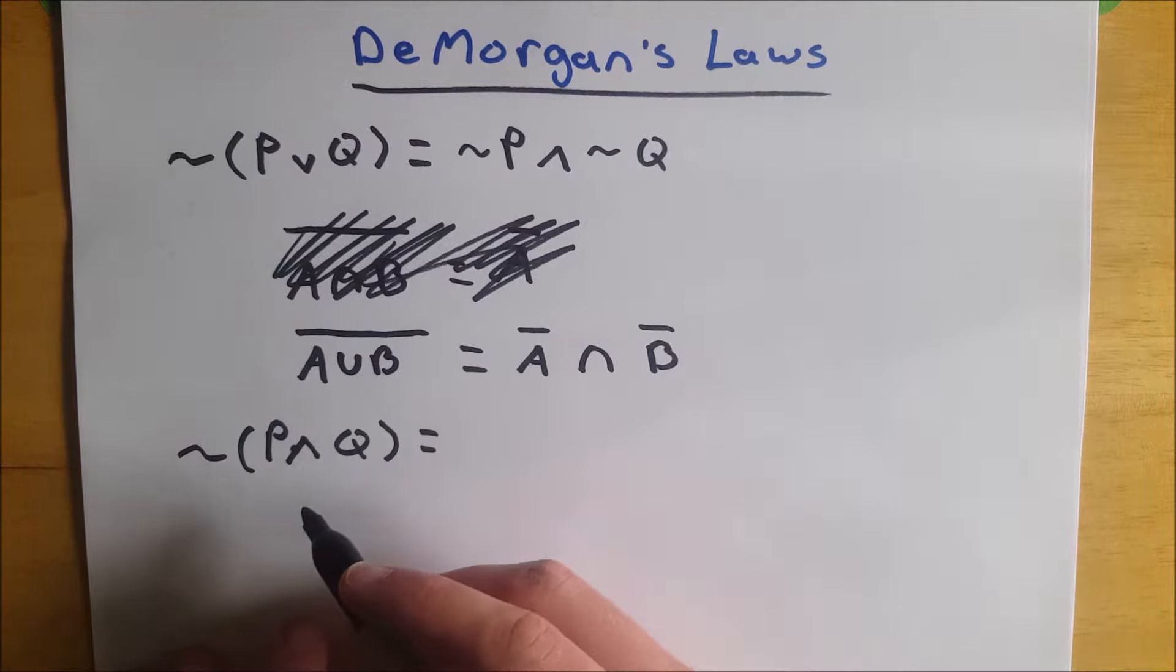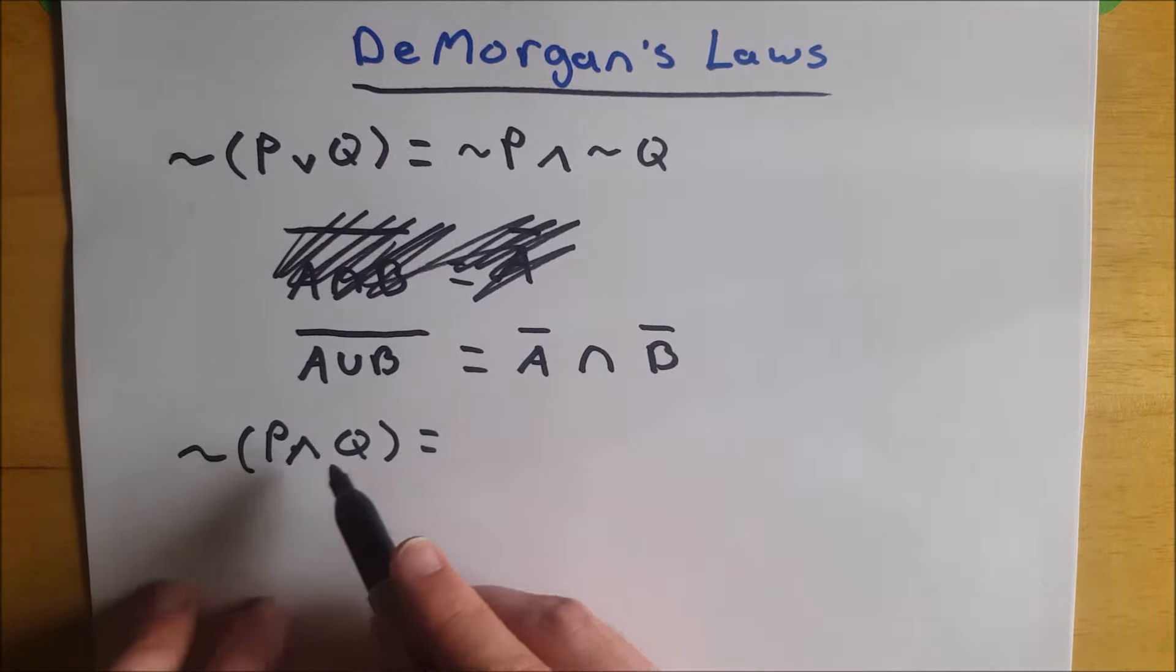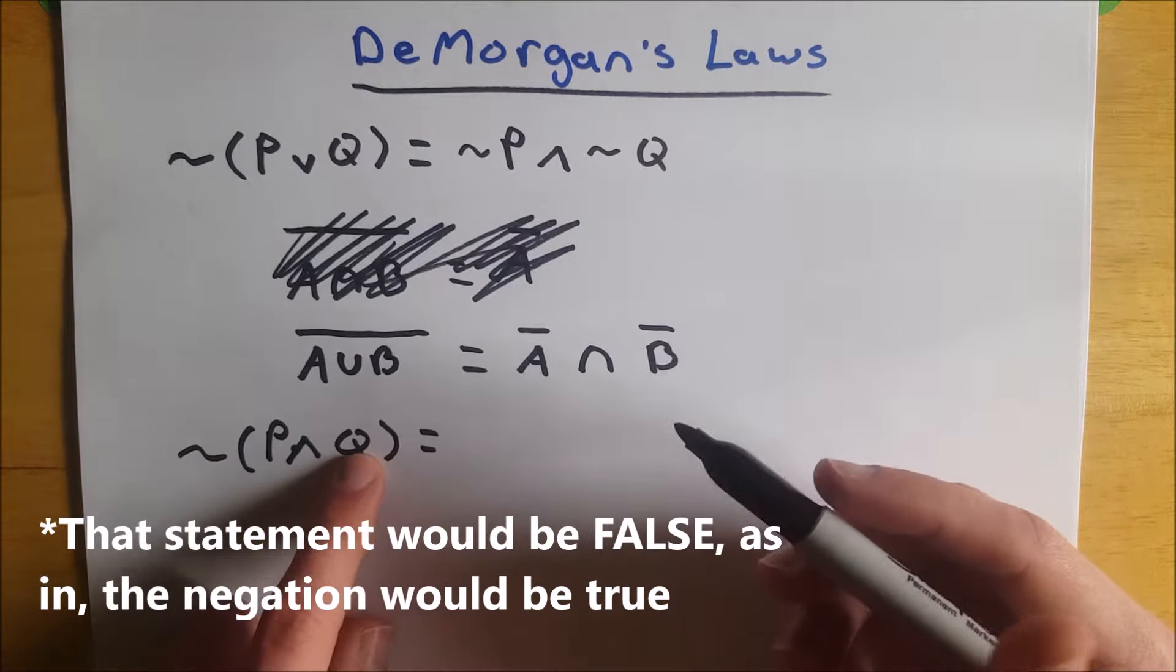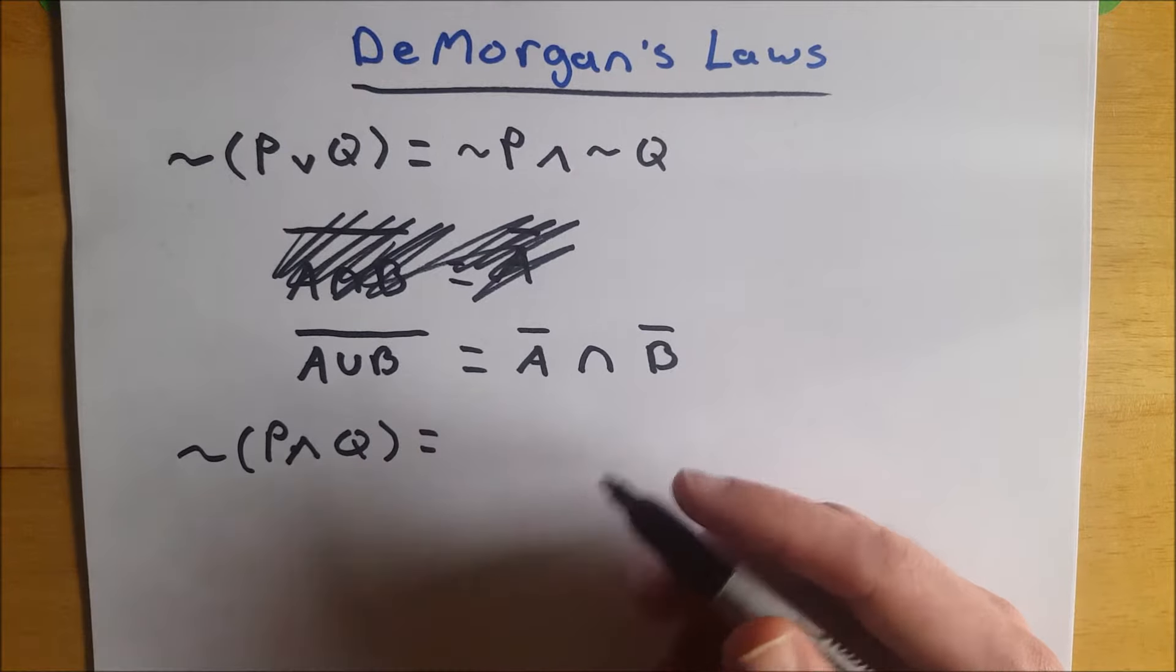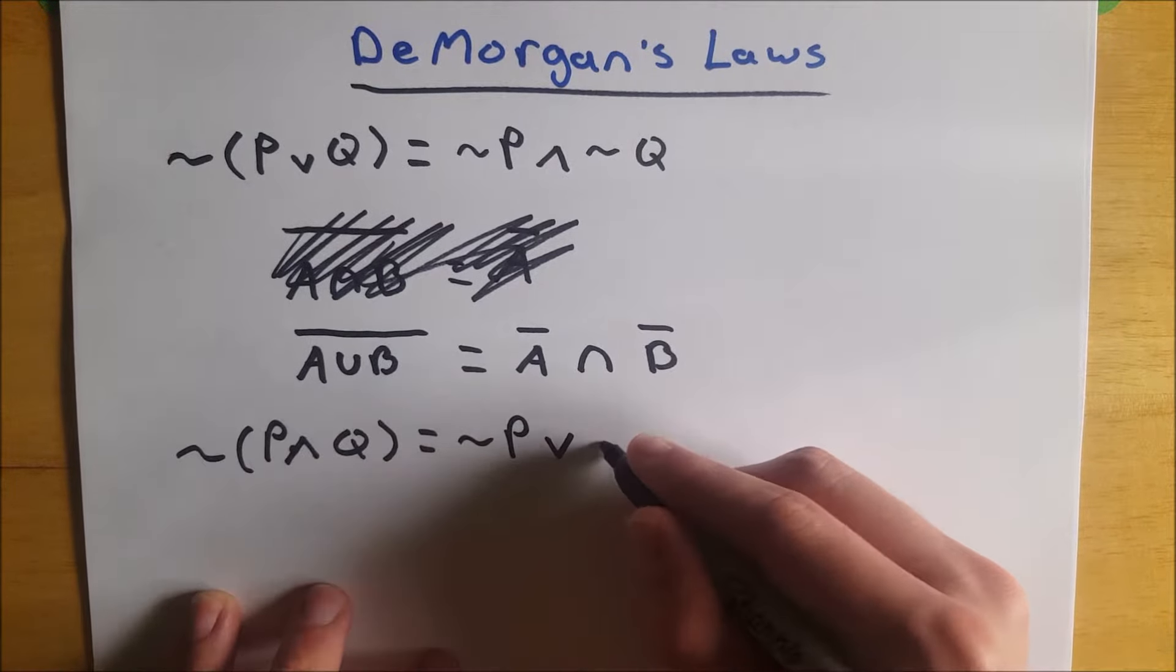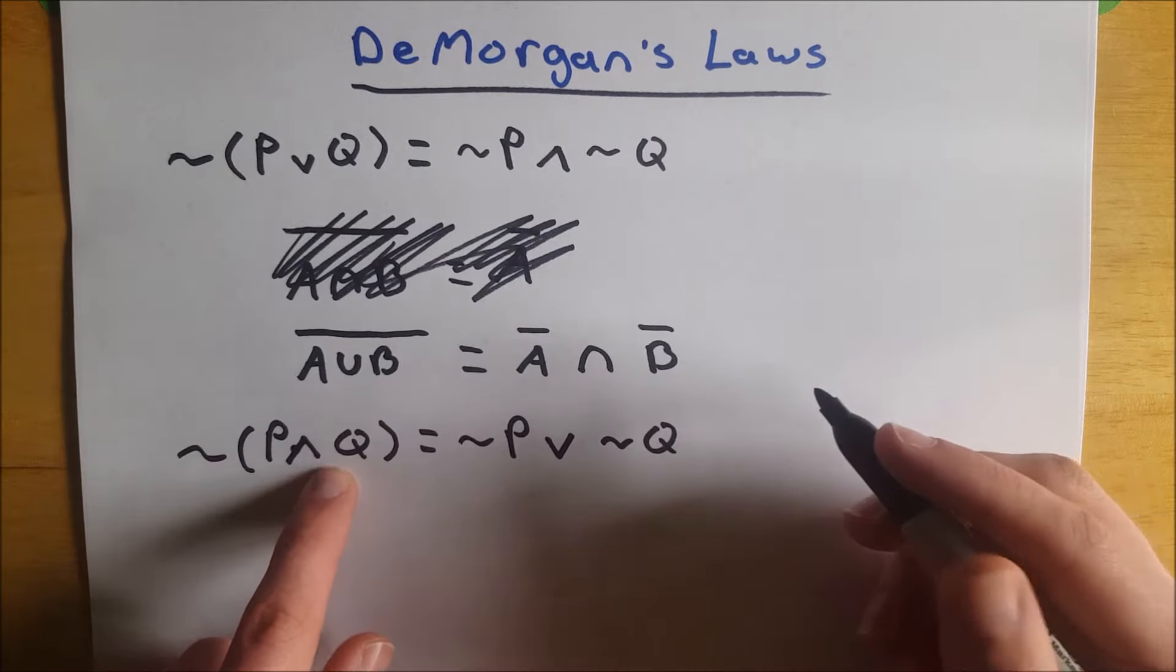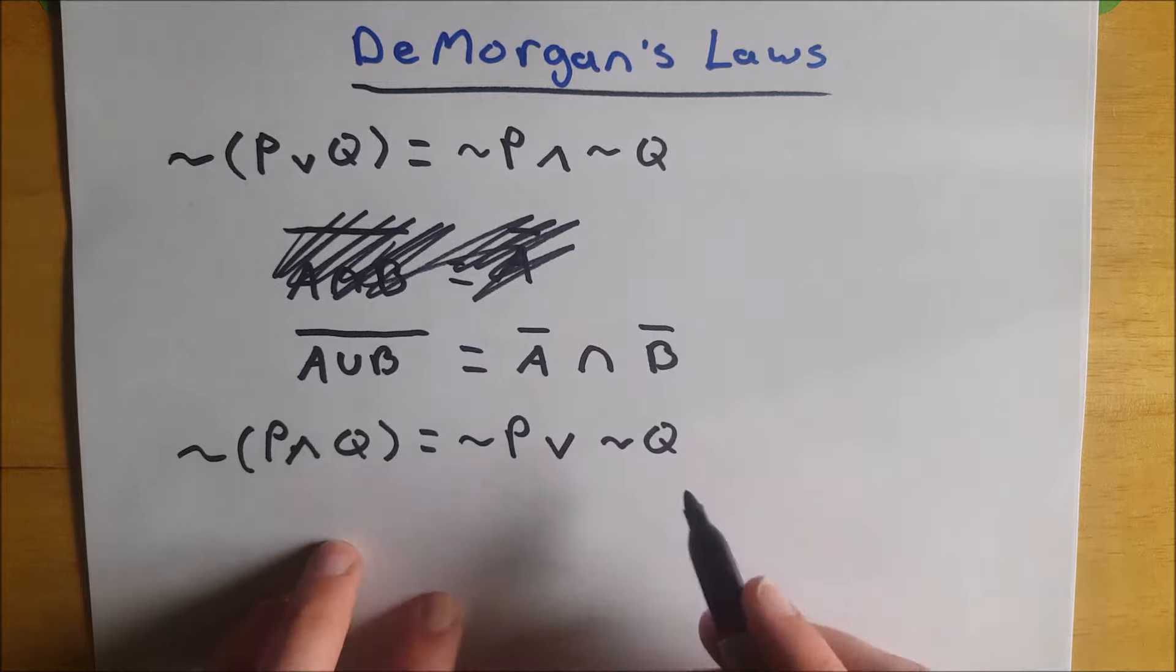Now if we look at not P and Q, suppose I tell you I'm going to bring you cookies and milk. That statement would be false if I didn't bring you cookies, or I didn't bring you milk, or I just didn't bring you either, which is covered under the or statement. So this becomes not P or not Q. If I say I'll bring you cookies and milk, then the opposite of that would be to not bring you cookies or to not bring you milk. And that is what you get.